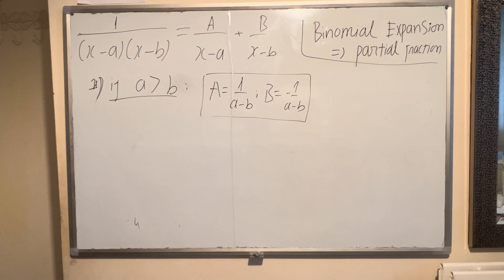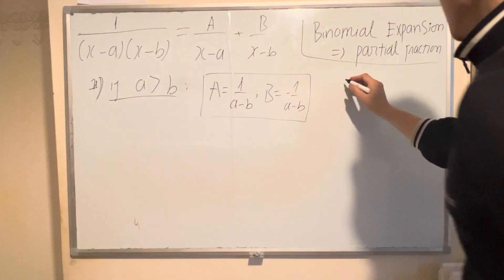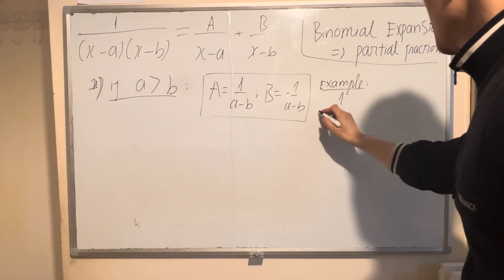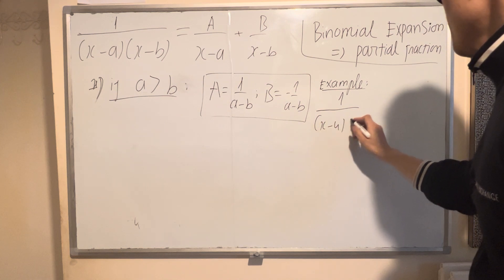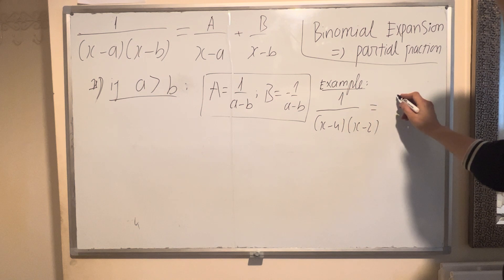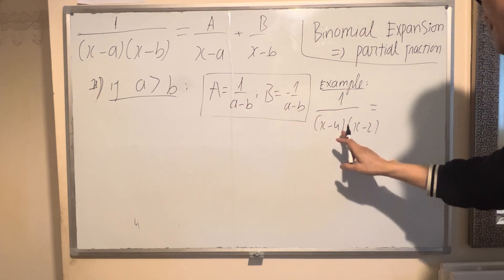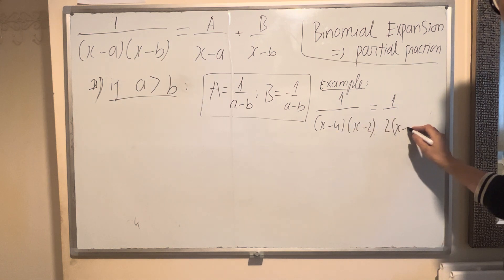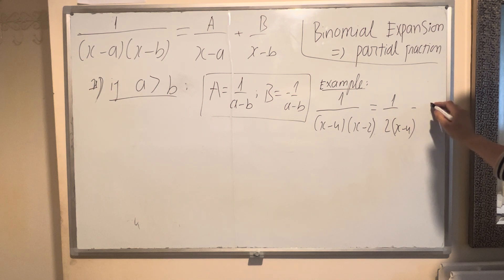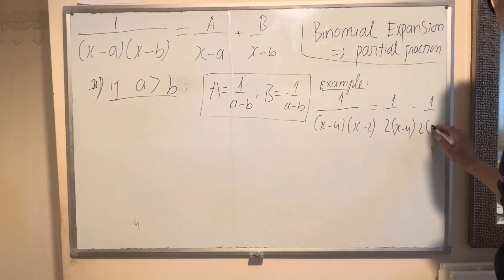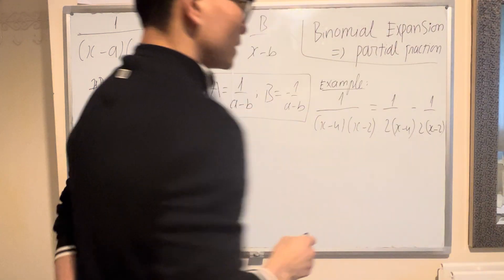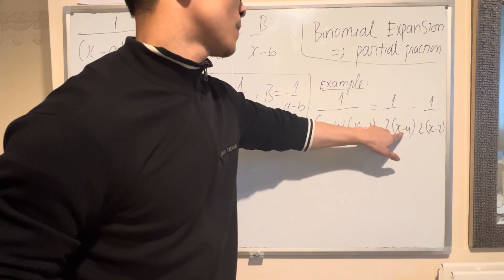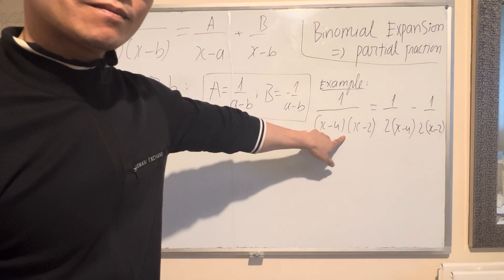If a is bigger than b, A will be 1 over (a minus b), and B is opposite to A, so negative 1 over (a minus b). For example: 1 over (x minus 4)(x minus 2). A equals 1 over (4 minus 2), divided by (x minus 4). B is opposite, so negative 1 over 2, divided by (x minus 2). Very simple — you can check it easily.